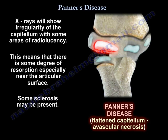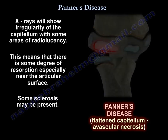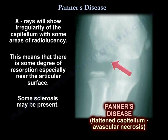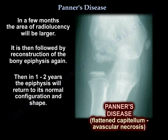On x-ray, the capitulum will look irregular with some areas of radiolucency, meaning there is some resorption, especially near the articular surface. There may also be some sclerosis. In a few months, the area of radiolucency will be larger, followed by reconstruction of the bony epiphysis. Then, in one to two years, the epiphysis will return to its normal configuration and shape.